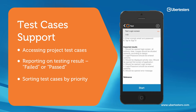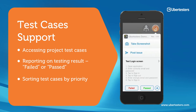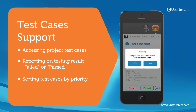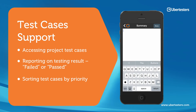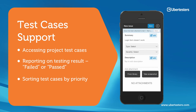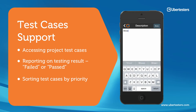Click the start button to begin testing the app by following the test case scenario. Once a bug is found, click on the UberTester button, mark the test case as failed, confirm your action, and post an issue. The reported bug will be associated with the selected test case. If a test case is completed successfully, just mark it as passed.